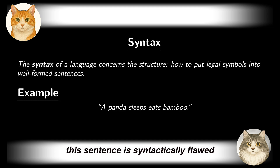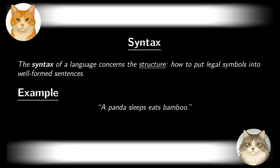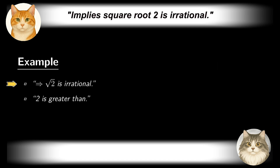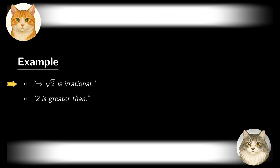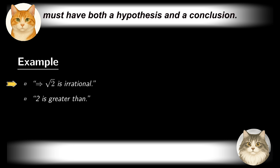This sentence is syntactically flawed. It combines two verbs without connecting them using a conjunction like 'and.' Here are a few more examples of flawed syntax: 'Implies square root 2 is irrational.' What implies it? The premise is missing. An implication statement must have both a hypothesis and a conclusion.